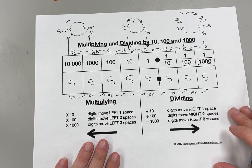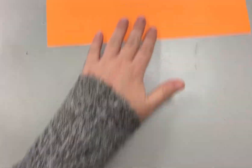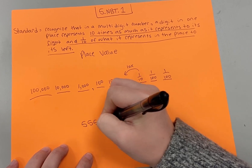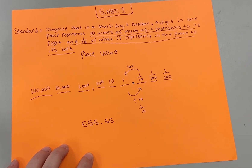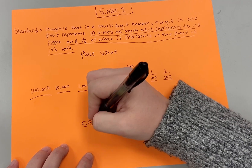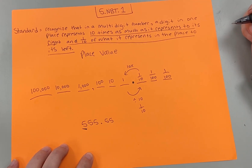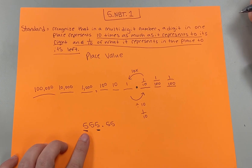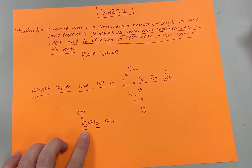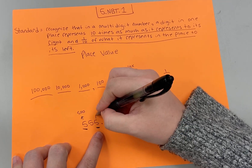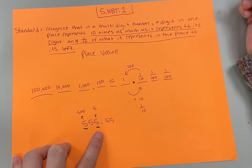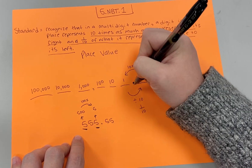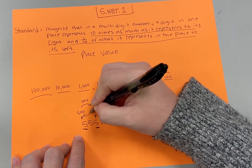If we want to take it a little bit further, let's pretend that I had five hundred fifty-five and fifty-five thousandths, and I asked you to compare the value of the five in the hundreds place to the value of the five in the ones place. The five in the hundreds place has a value of five hundred. The five in the ones place has a value of five. Five hundred is a hundred times bigger than five.